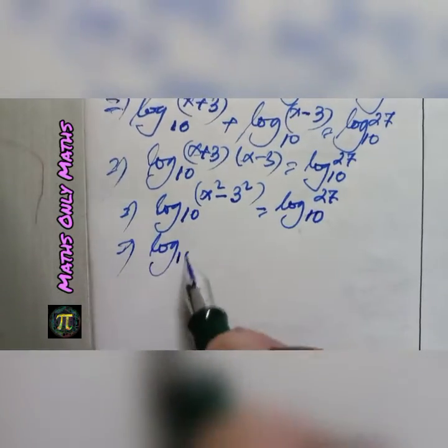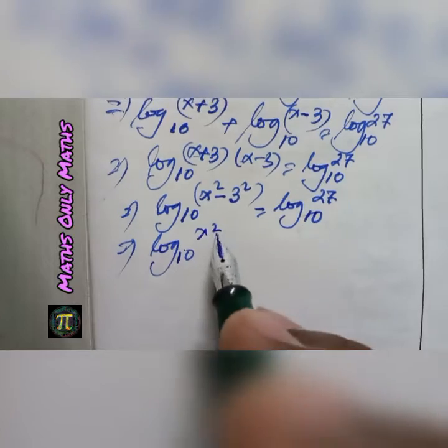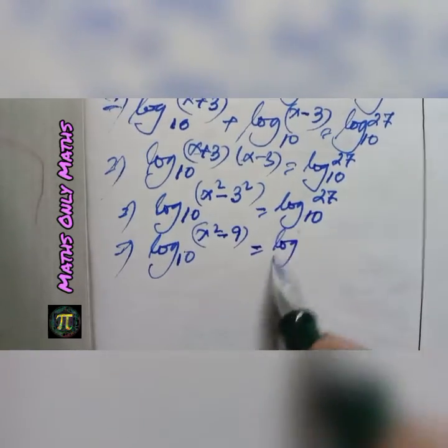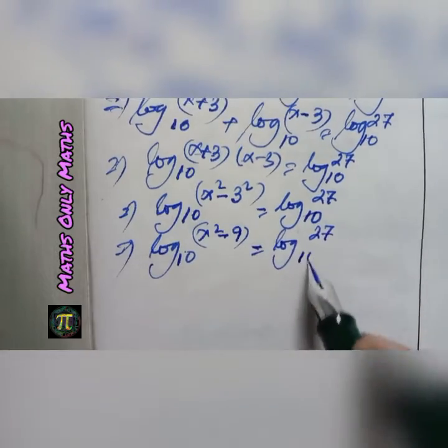Now I get log(x² - 9) to the base 10 equals log 27 to the base 10.